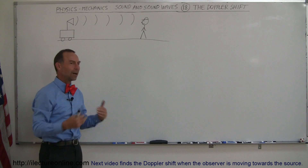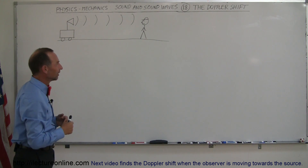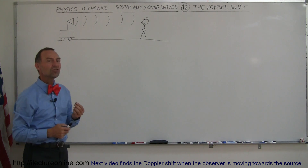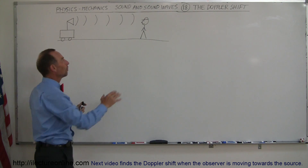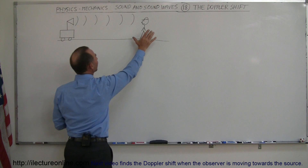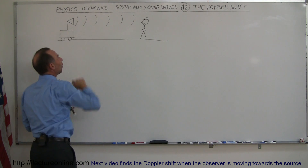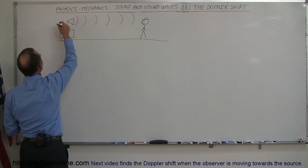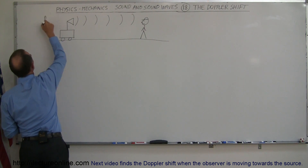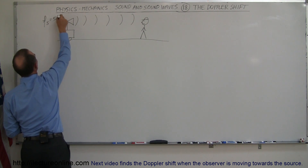Same direction, opposite directions — something changes. The frequency observed by the observer will change depending upon what is going on. So let's say that here's the frequency of the source, starting at 500 Hz.